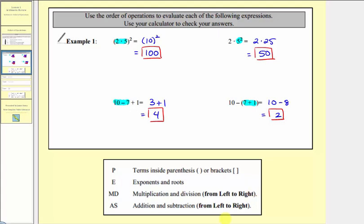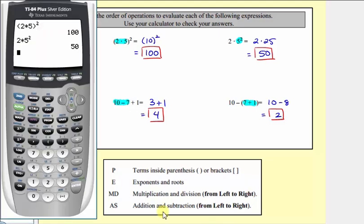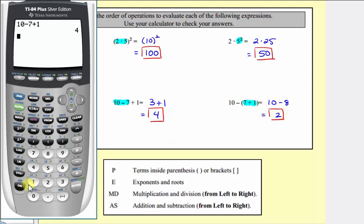Checking on the calculator, we have ten minus seven plus one for the first expression, which does equal four. And for the second expression, we have ten minus the quantity seven plus one, which does equal two.